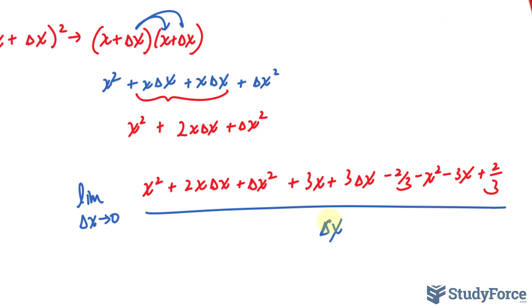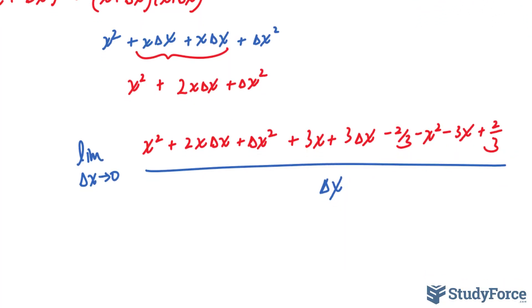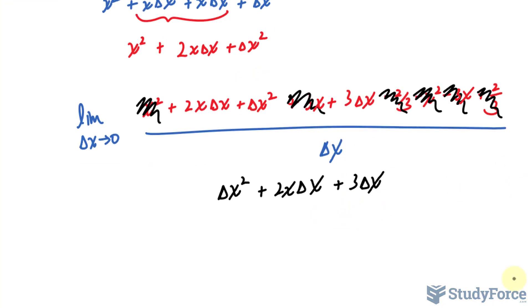So if I substitute 0 into delta x right now, I still get 0 in the denominator. So we still have some more algebraic manipulation. And we can start to cancel things out. Watch this. This term and this term can cancel out. This term and this term also go away. We have negative 2 over 3 and positive 2 over 3. So we've pretty much cleaned this up really well. We're left with delta x squared plus 2x delta x plus 3 delta x over the only term at the bottom.